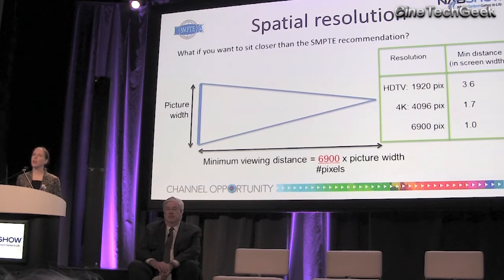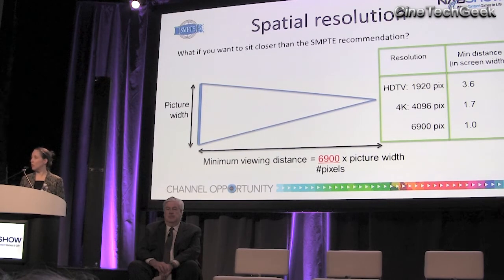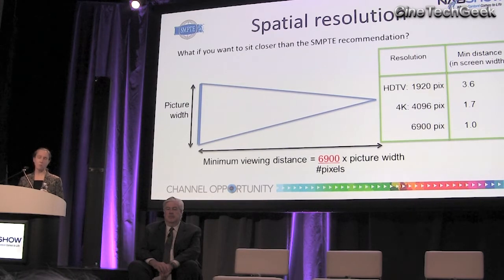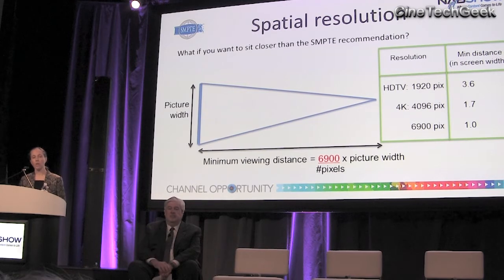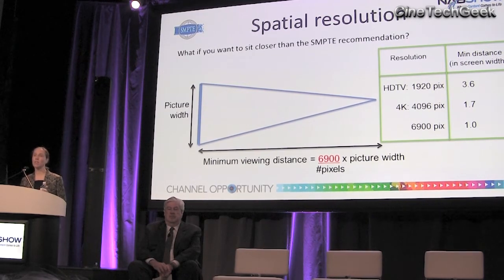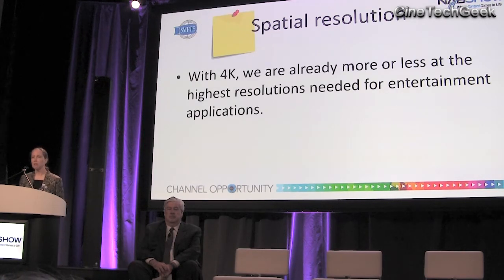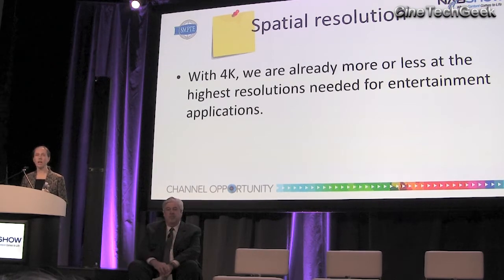We can also turn it around and say: given a particular display, how close can I sit before I'm limited by the pixel density? For HDTV, it turns out that's quite far back — you have to be 3.6 picture widths away. If you want to sit as close as one picture width to the screen, you need nearly 7,000 pixels across. But my take-home message on spatial resolution is that we're essentially there: with 4K, we are basically at the highest resolution you would need for entertainment purposes.